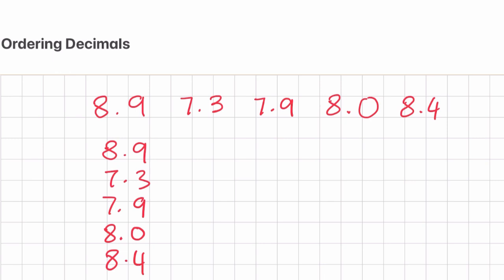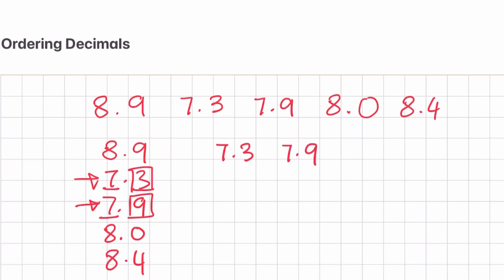We can see the first number is 8.9, but 7.3 is smaller than that. So we're going to compare the units digit, which is 7 and 7 — they're both the same. Now we're going to move on to the tenths digit: 3 and 9. We can clearly see 7.3 is the smallest, so let's write 7.3 first. The next number we know is going to be 7.9.